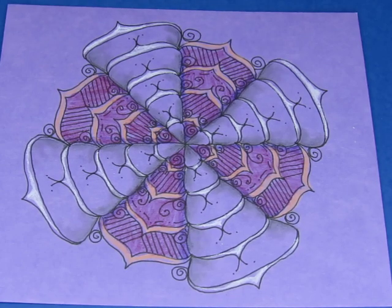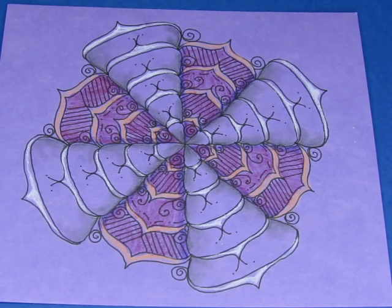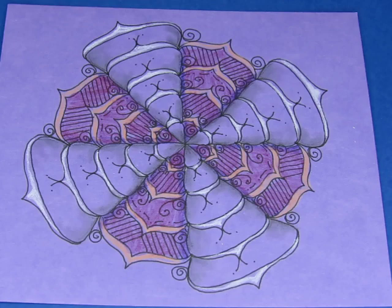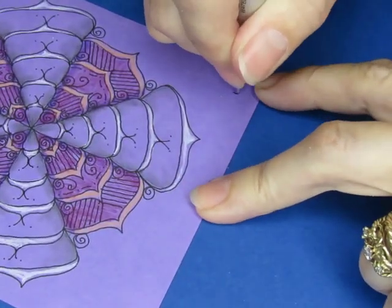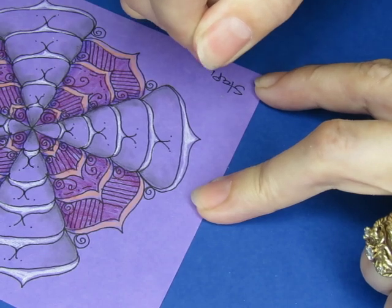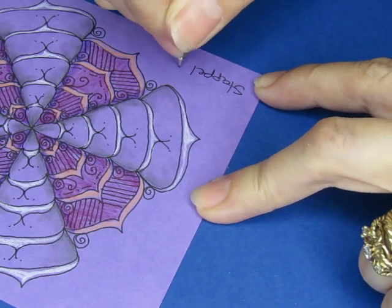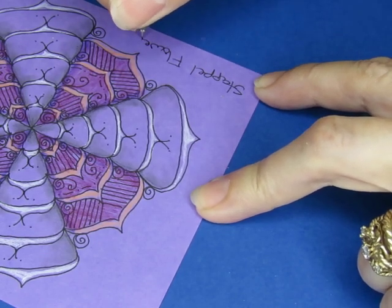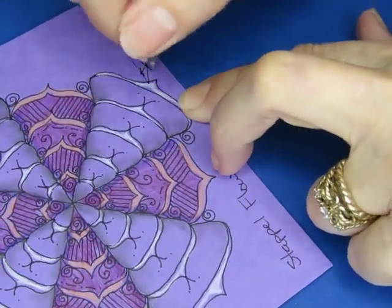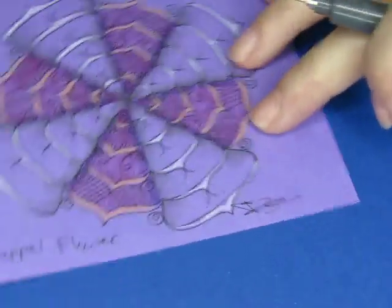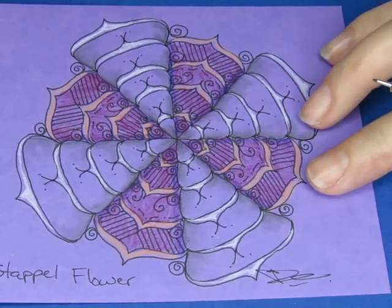What was the name of this pattern? I forget. I've already forgotten. Staple flower. S-T-A-P-E-L. Oh gosh, this pen. What? All of a sudden I can't get the lid off this pen. I don't know. S-T-A-P-P-E-L. Staple flower. I'll sign it. And there we go.